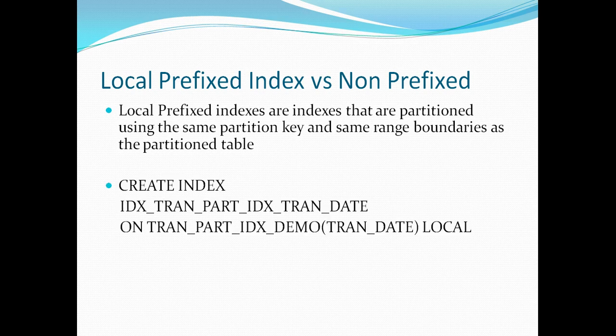If you are using a composite key to partition your table, then your local prefix index key should be the leftmost combination of columns. In this example, I have used a single key — transaction_date — so I'm creating an index on that column and specifying the keyword LOCAL, which tells Oracle I'm creating a local partition index on my interval partition table. Since the column I've used is the same as the partition key, this is a local prefixed index.